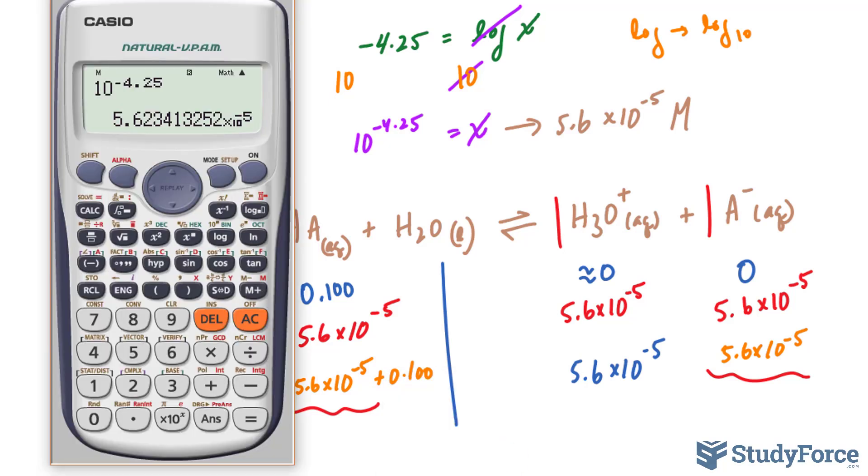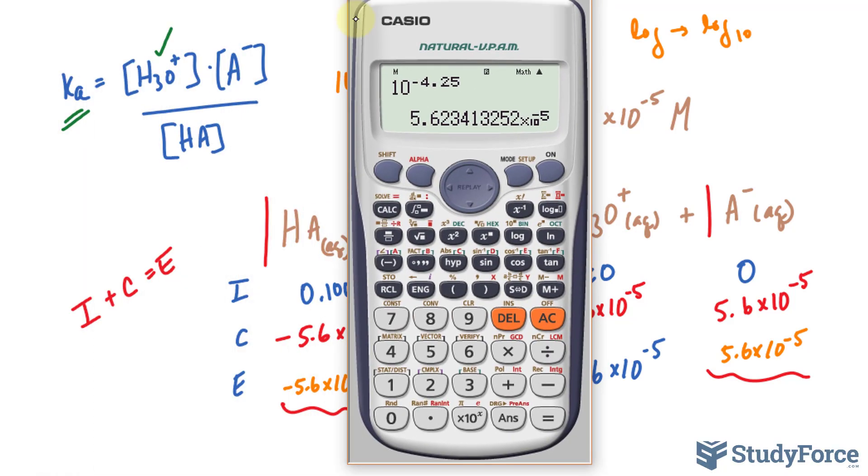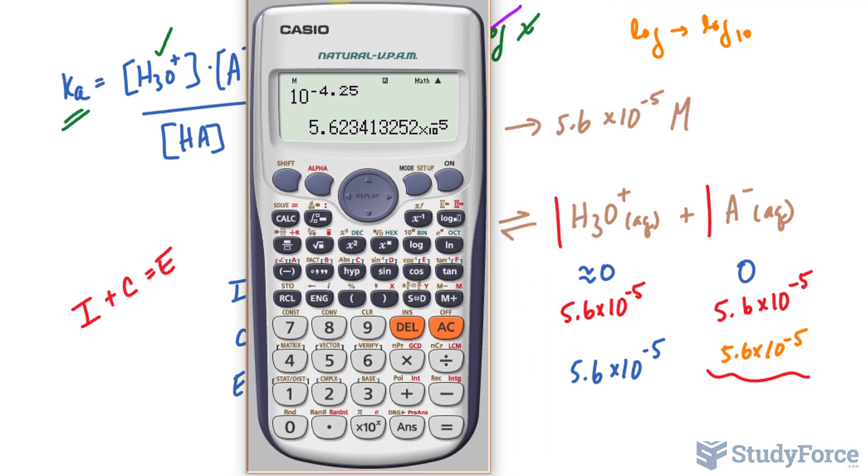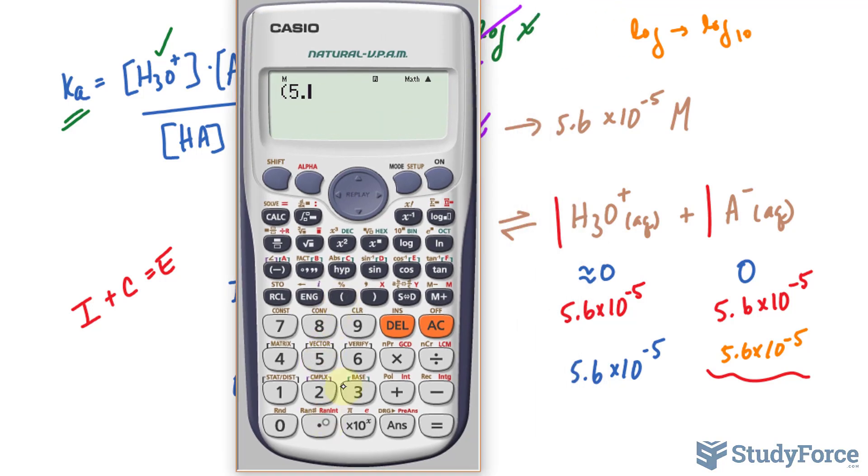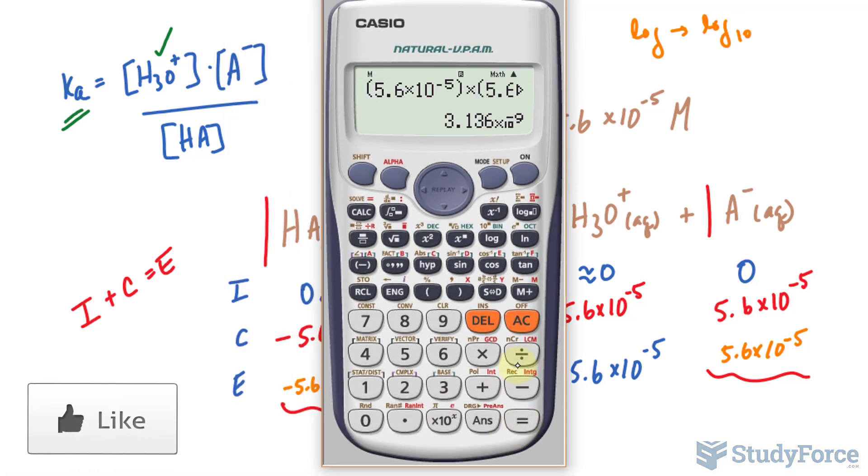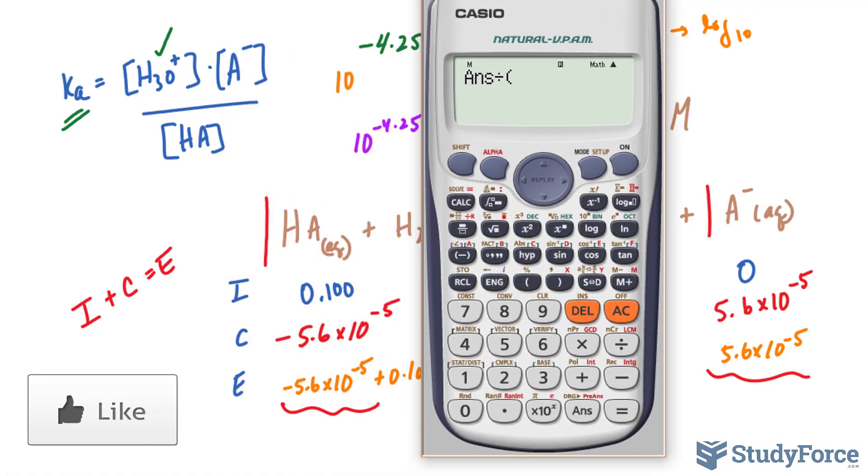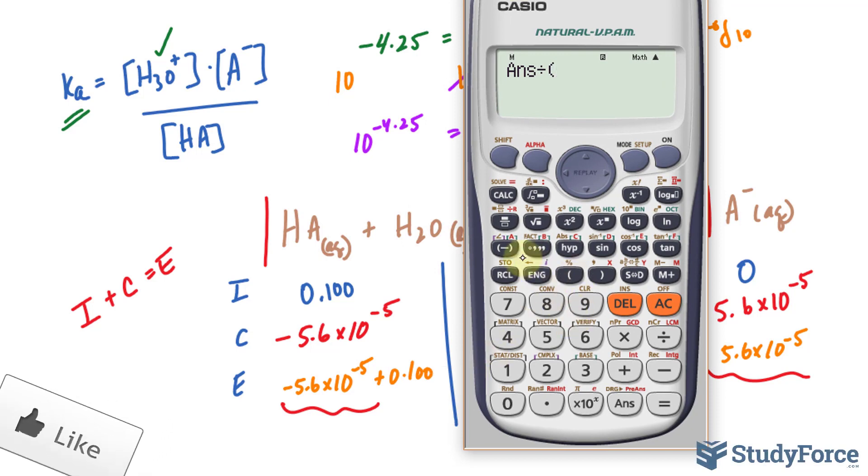Now we have everything we need to substitute into this equilibrium expression. Let me show you what I mean. Starting with H3O+, 5.6 times 10 raised to the power of negative 5, and that's being multiplied to the same thing. Now we'll divide this by this expression: negative 5.6 times 10 raised to the power of negative 5 plus 0.1.